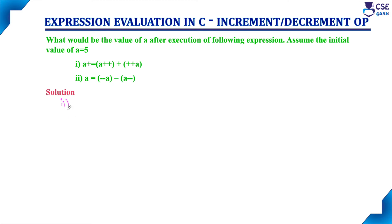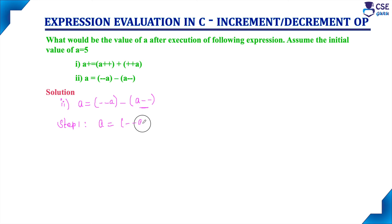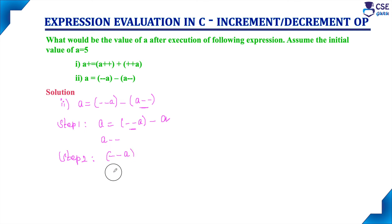Now consider the second expression: A equal to minus-minus-A minus A-minus-minus. Step 1: all increment and decrement operators are right-associative, so we consider the rightmost expression first — that is the post-decrement on A. Since this is a post-decrement operator, the value of the variable is used first, and in the next step the variable gets decremented by 1. In step 2, we also need to solve the pre-decrement expression. The pre-decrement means the value of the variable gets decremented by 1 first, and then the decremented value is used.